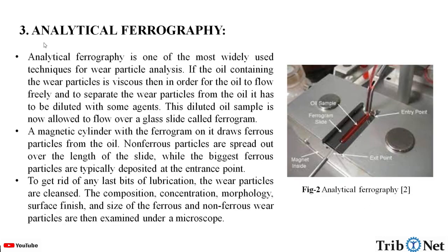Analytical ferrography is one of the most widely used techniques for wear particle analysis. If the oil containing the wear particles is viscous, then in order for the oil to flow freely and to separate the wear particles from the oil, it has to be diluted with some agents. This diluted oil sample is now allowed to flow over a glass slide called a ferrogram. A magnetic cylinder with the ferrogram on it draws ferrous particles from the oil. Non-ferrous particles are spread out over the length of the slide, while the biggest ferrous particles are typically deposited at the entrance point. To get rid of any last bits of lubrication, the wear particles are cleansed. The composition, concentration, morphology, surface finish, and the size of the ferrous and non-ferrous wear particles are then examined under the microscope. Here we can see in the figure how the analytical ferrography is performed with labeling.